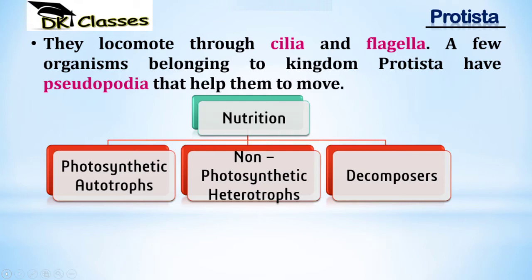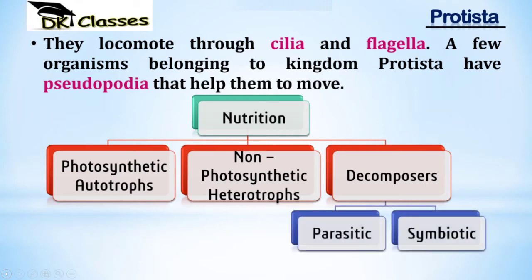Next are decomposers, which are of two types: parasitic and symbiotic. Decomposers are living beings that can destroy other living beings. A parasite remains benefited while the host is always harmed. Symbiotic Protista show mutual relationships — for example, they live symbiotically in the gut of animals such as termites, showing a mutual relationship.